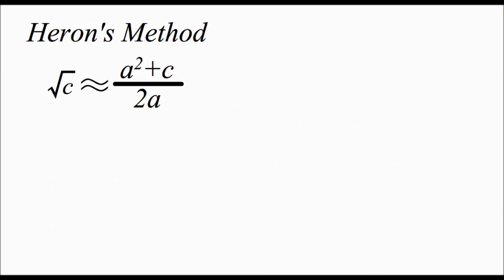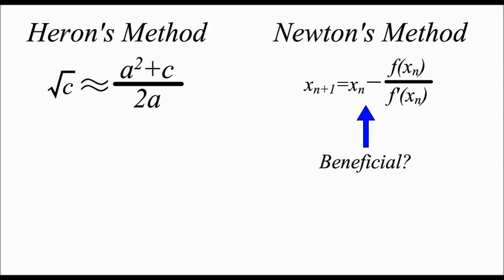Although this method was discovered well before calculus, the same result is achieved by Newton's method based on calculus. But if we could get the same answer by using Heron's method, is there a benefit to Newton's method? Yes. The significant difference is that Newton's method can approximate values for other irrational numbers like e and pi, but that's a discussion for another day.